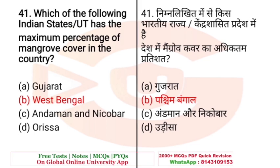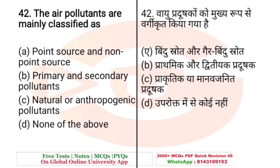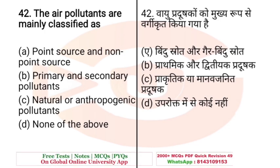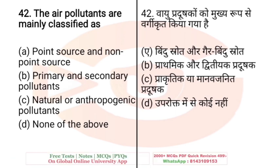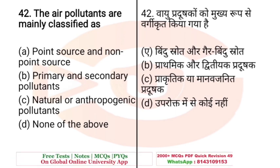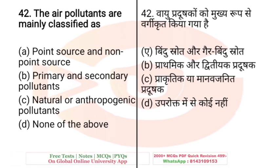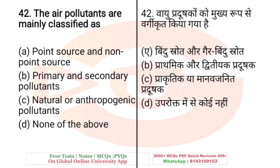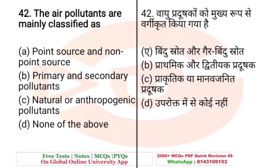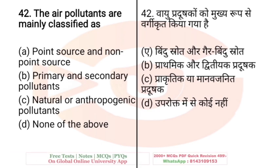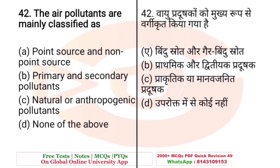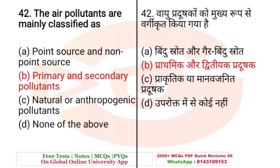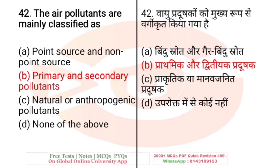Question: The air pollutants are mainly classified as — A. Point source and non-point source, B. Primary and secondary pollutants, C. Natural or anthropogenic pollutants, D. None of the above. The right answer is B — primary and secondary. Pollutants are classified into these two types.